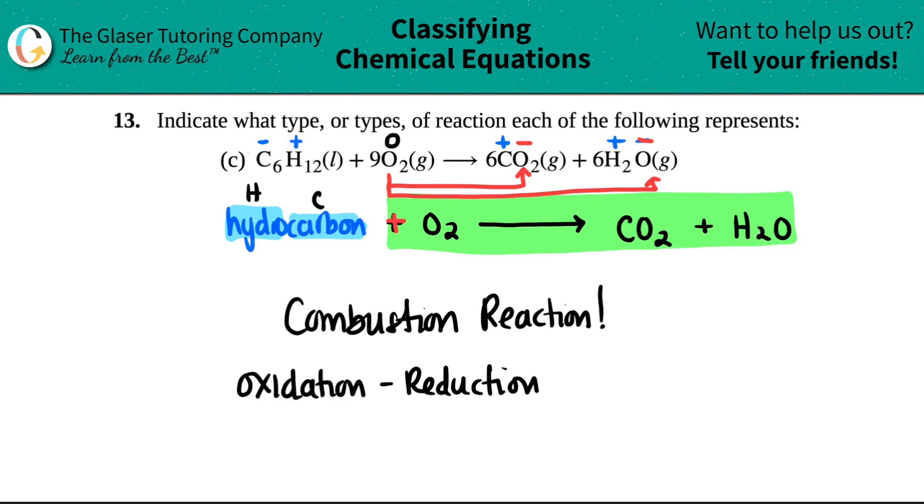We will get into specifically what oxidation-reduction is in later questions in this chapter, so hang tight for that. The only thing you should know here is that if you have a change in the charge, I started off with zero and then went somewhere, in this case to a negative two. When you have a change in the charge, it's an oxidation-reduction reaction. So this one has two answers.